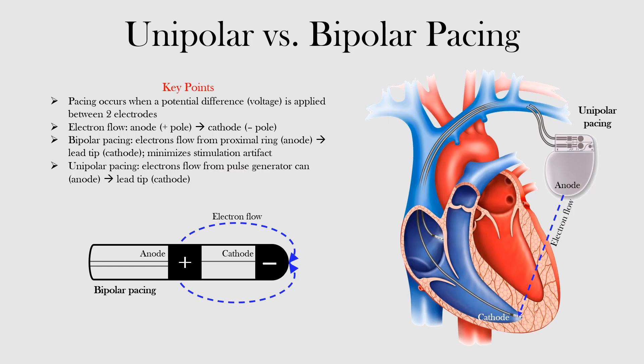Pacing occurs when a potential difference — that is, voltage — is applied between two electrodes. Pacemakers can use either a unipolar or bipolar mode of pacing.